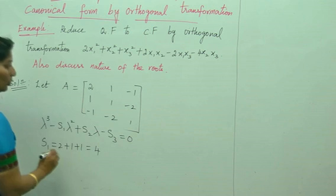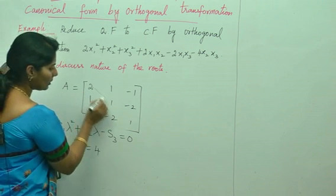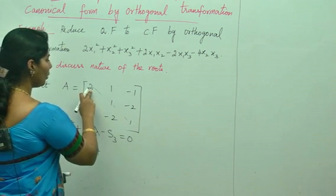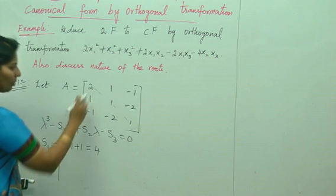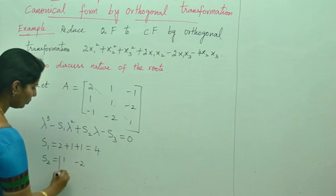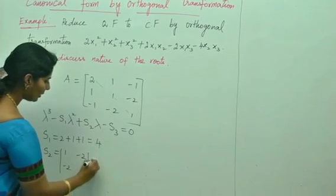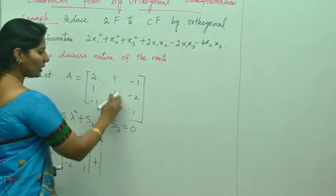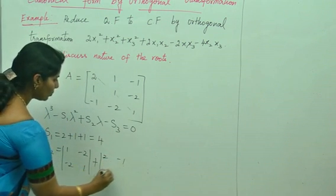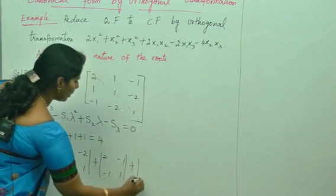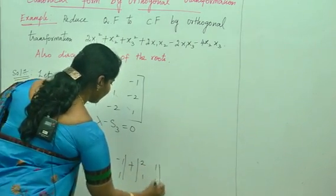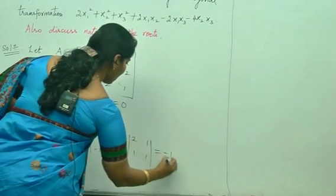s2 is the sum of the minors of the diagonal elements. For the first diagonal element, the minor gives the determinant of the remaining 2x2 submatrix: (1)(1) minus (minus 2)(minus 2) equals 1 minus 4 equals minus 3. Adding the minors for the second and third diagonal elements similarly, the total s2 equals minus 1.